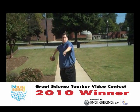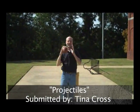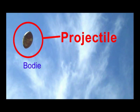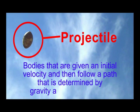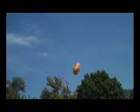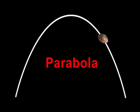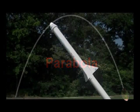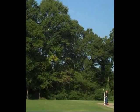A thrown football, an object dropped from an airplane, or a bullet shot from a gun are all projectiles. Projectiles are bodies that are given an initial velocity and then follow a path determined by gravity and air resistance. The path followed by a projectile is called its trajectory. Projectile motion is a parabola. We can demonstrate projectile motion by constructing and launching a paper rocket using compressed air.